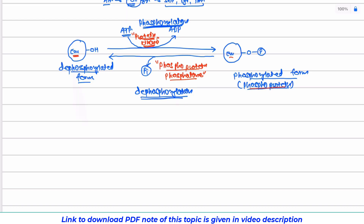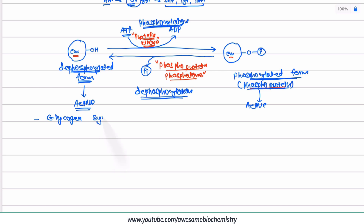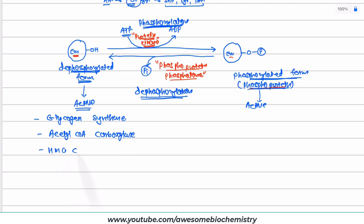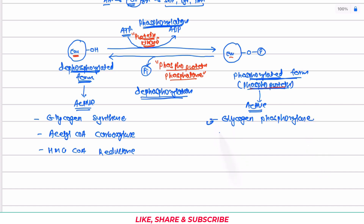Some enzymes are active in their dephosphorylated form, whereas some enzymes are active in their phosphorylated form. Enzymes active in the dephosphorylated form include glycogen synthase, acetyl-CoA carboxylase, and HMG-CoA reductase. Among enzymes active in the phosphorylated form, a very good example is glycogen phosphorylase — this is the most important one.